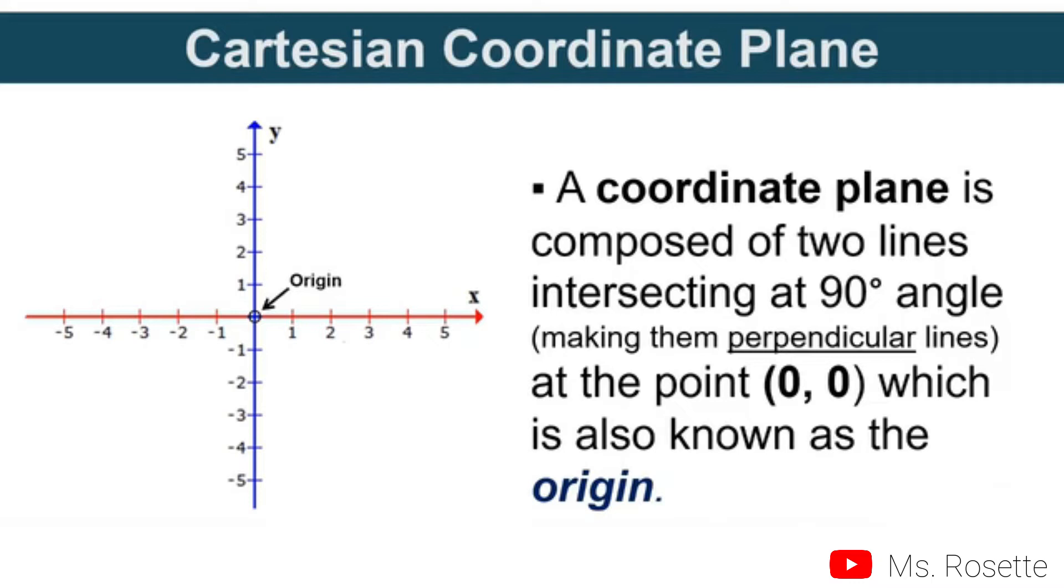Again, the intersection of the x-axis and y-axis is called the origin, which has the coordinates (0,0).